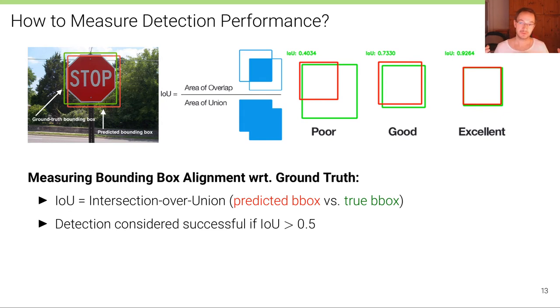Now we can consider a particular threshold for this intersection over union and consider this as a successful detection. For example, in this case here, if we consider an IoU threshold of 0.5, which is commonly used for 2D object detection evaluations, then this case on the left would be considered incorrect, and these two cases on the right would be considered correct detections.